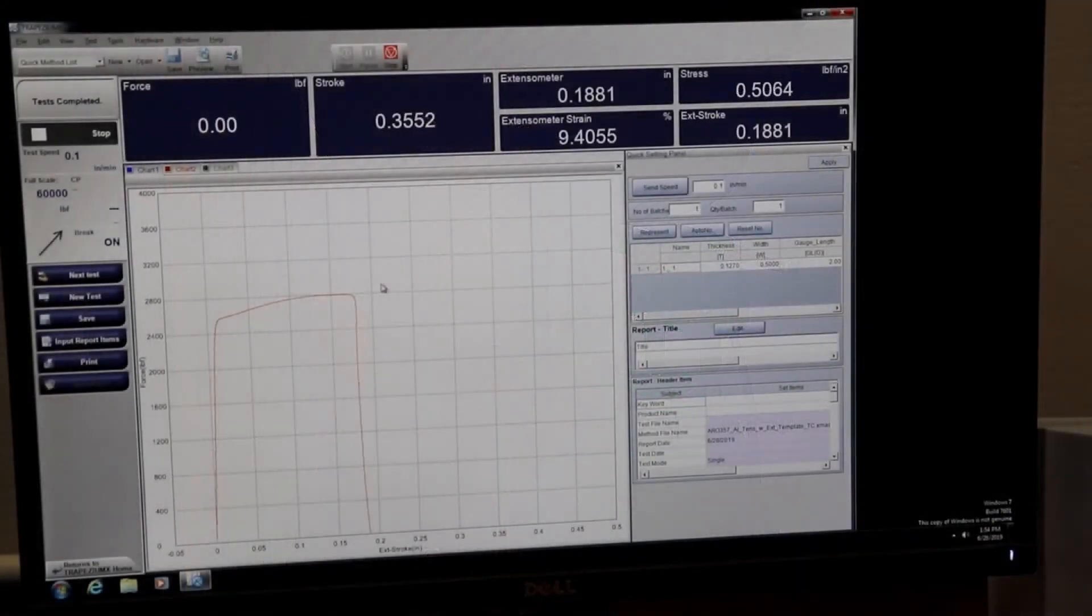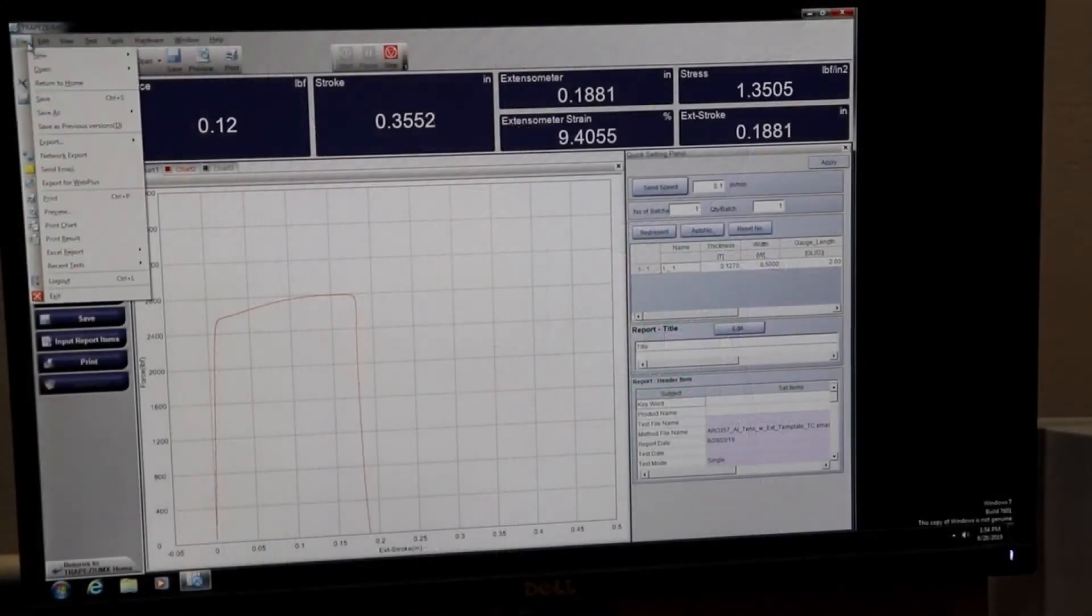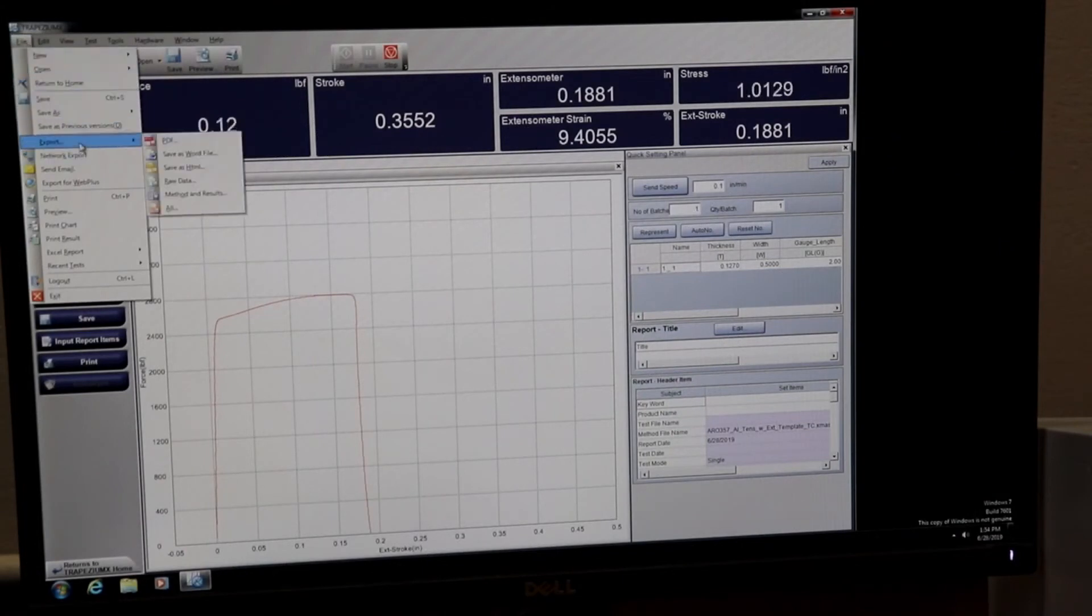We will now export the data for further analysis. To do so, we will click File, Export, Raw Data. We now name the file and save it to a place that can be retrieved easily.